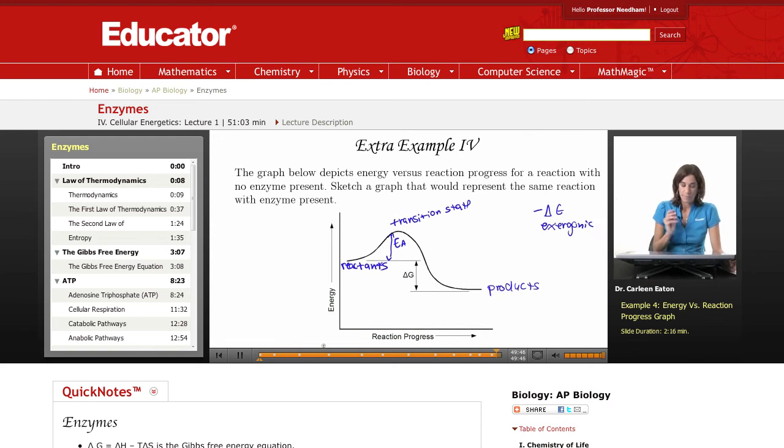Now, remember that enzymes lower the activation energy. They don't change the overall delta G.